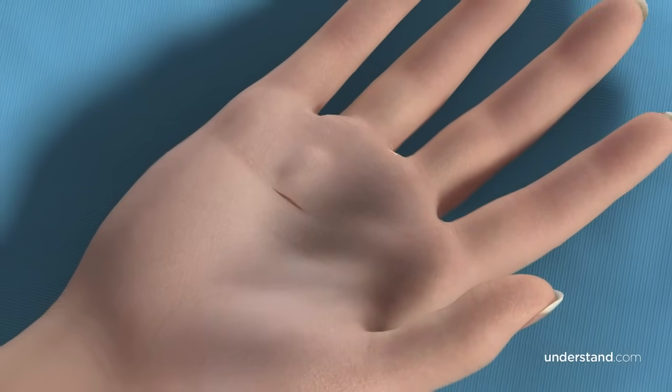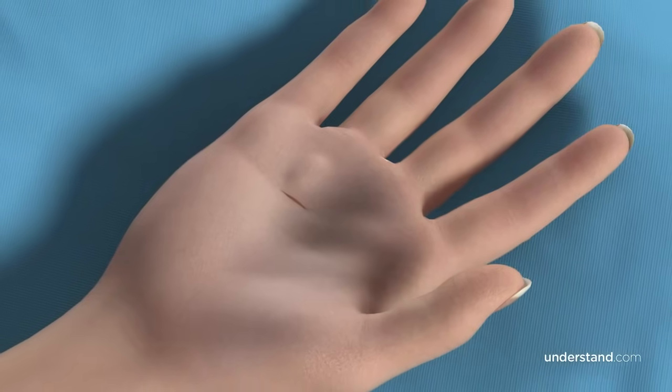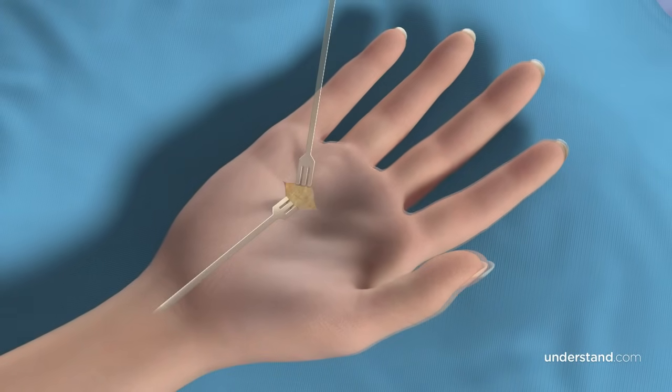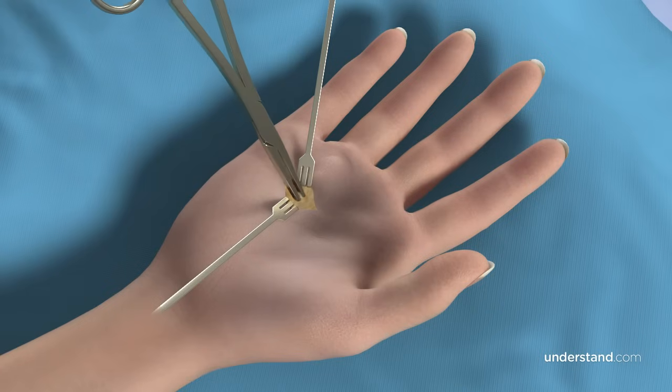When possible, the surgeon may create the incision along a crease that will conceal the scar. After the incision is made, the tissues are gently spread down to the level of the flexor tendon sheath.